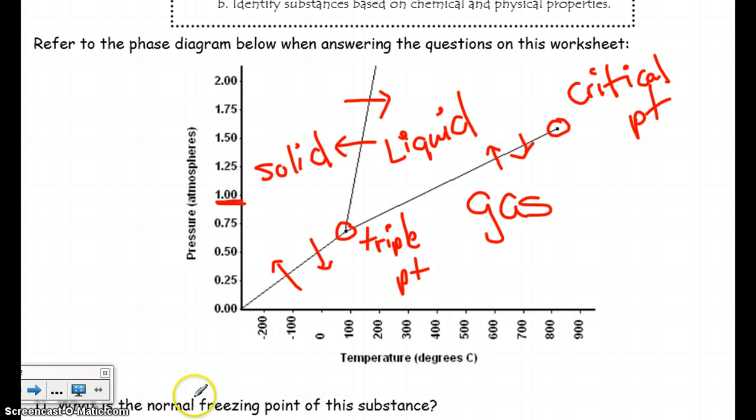All right, so if we're going to talk about the normal freezing point, normal means one atmosphere. So you want to go to the freezing line, that's between solid and liquid. And then to find the actual temperature, you extrapolate down to the temperature scale, so it's about 100 degrees.